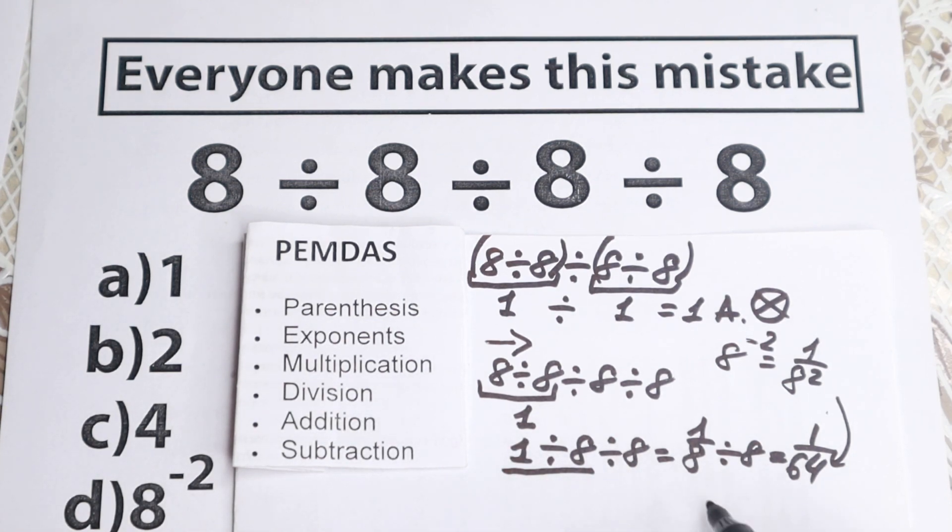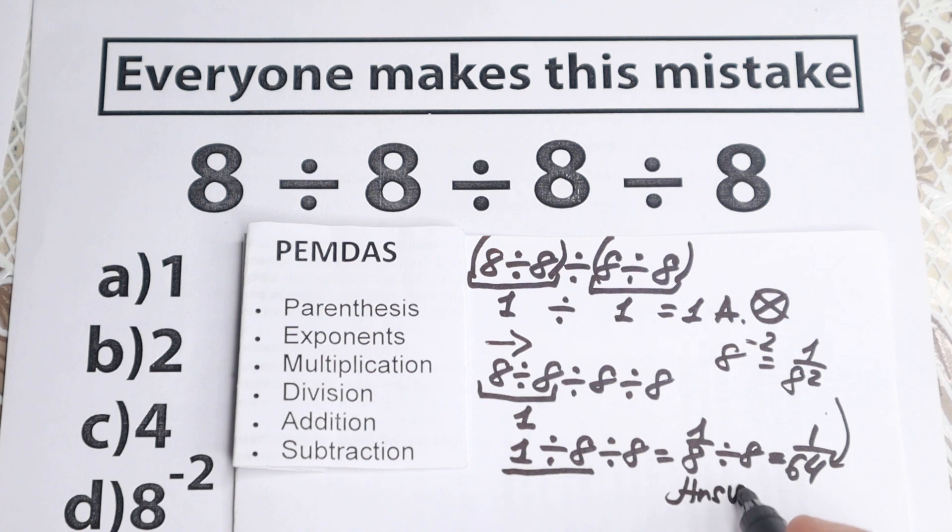So using this order, our answer is option, so our answer, our answer is option, option D, is absolutely correct answer.